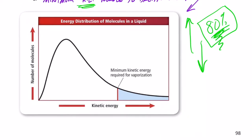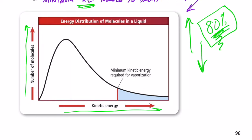Now let's relate that to molecules in a liquid. The average kinetic energy at a given temperature for all molecules is constant — but that doesn't mean they all have the same kinetic energy. Take a look at this graph. The y-axis is the number of molecules with that energy, and the x-axis is the actual kinetic energy. Those molecules way over to the right are the ones that have enough energy to escape the attractive forces of their neighbors. But does that mean they're going to evaporate? No — where do they also have to be? That's right, they need to be on the surface.